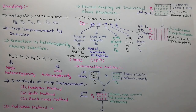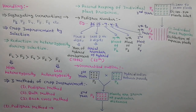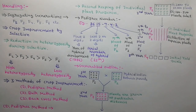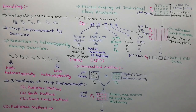From the fourth to seventh year, F3, F4, F5, and F6 generations are raised. During each year, individual plant progenies are developed and plants with superior characters are selected. In the eighth year, F7 generation is raised and initial yield trials are performed.